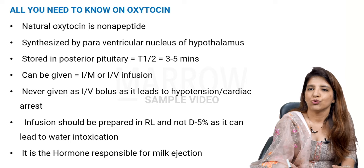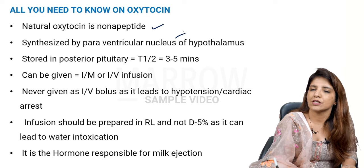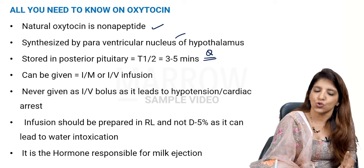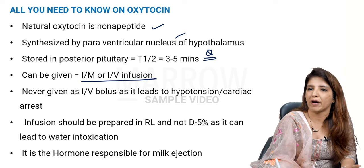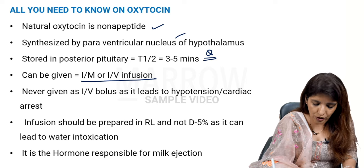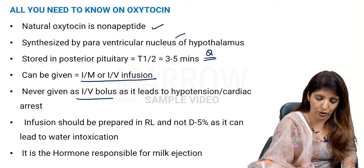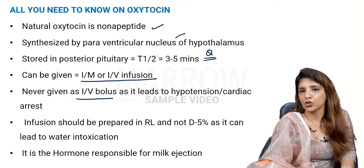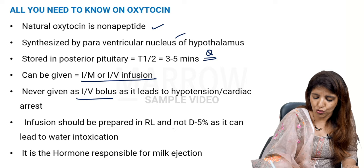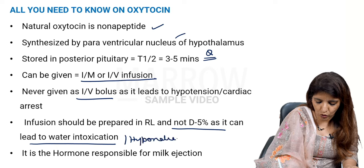Natural oxytocin is a nonapeptide synthesized by the paraventricular nucleus of the hypothalamus and stored in the posterior pituitary. T-half is 3 to 5 minutes. It is preferred as IV infusion for AMTSL and PPH management. Never give it as IV bolus, as that can lead to hypotension and cardiac arrest. When preparing an infusion, always use electrolyte-rich media like Ringer's lactate or normal saline — not dextrose 5%, as that can cause water intoxication or hyponatremia.